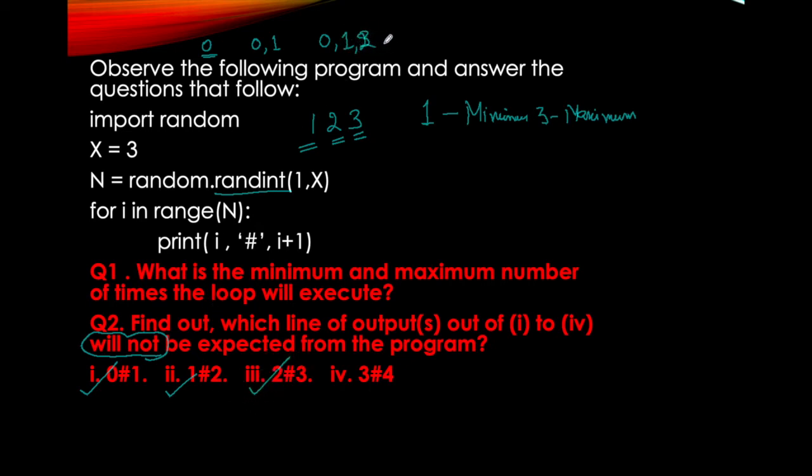Yes, 2,3 can also happen. Now 3,4 cannot happen. Why can't it happen? Because we are not getting the value 3 at all. The variable i will either remain only 0, or i value can be 0,1, or 0,1,2. So if it's 0, then 0#1 can print. If it's 1, then 1#2 can print. If it's 2, then 2#3 can print. But i will never be 3, so 3#4 can never happen. So this cannot be there. This is not a possible answer. So the answer will be option number 4, that is not a possible answer. Understood?